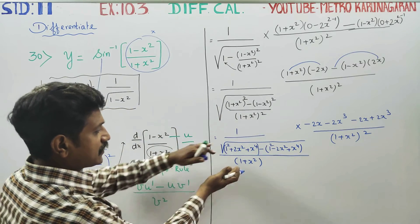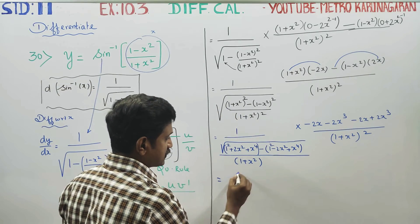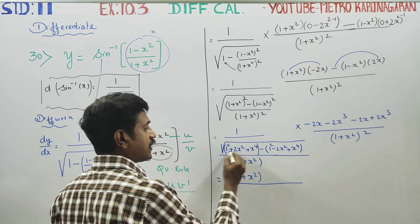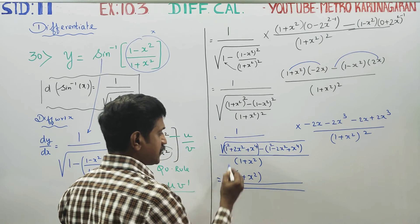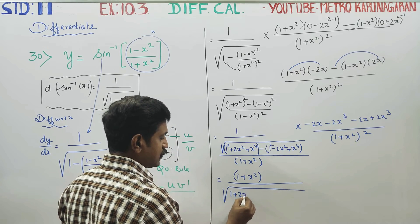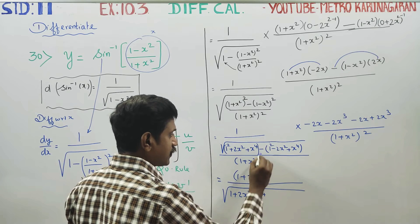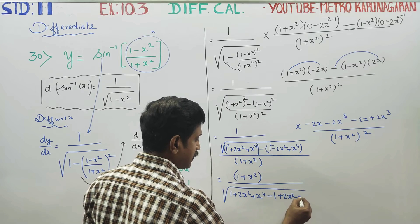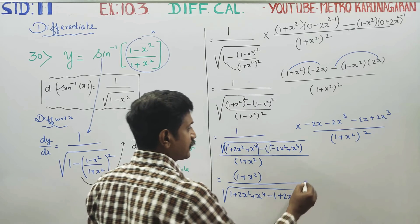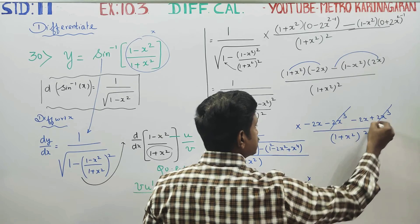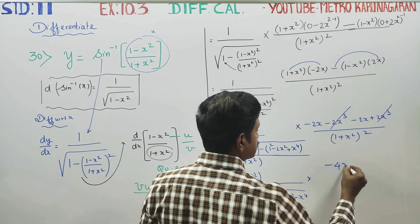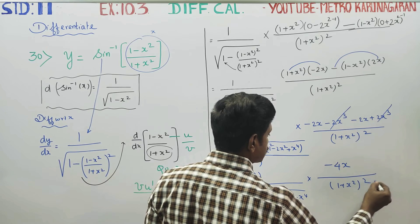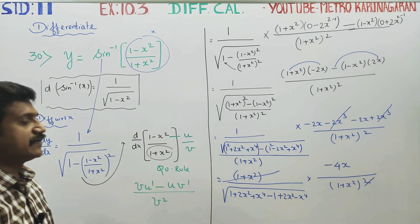Alright, this is the reciprocal of (1 plus x square), all divided by — releasing the bracket: 1 plus 2x square plus x power 4 minus 1 plus 2x square minus x power 4. We get minus 4x by (1 plus x square) all squared. The square terms cancel.